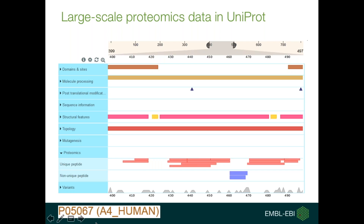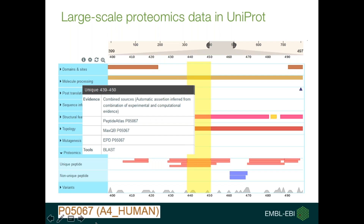Suffice it to say that this in silico dataset is species specific, which means there is, for example, a specific dataset for human. Both these datasets are combined and then used to annotate peptides onto UniProt protein sequences.